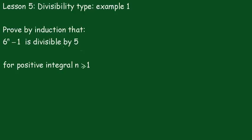Now this statement really means that 6 to the n minus 1 equals 5j, where j is some integer. In other words, a multiple of it. And of course, j must be an integer.